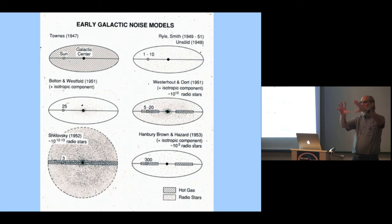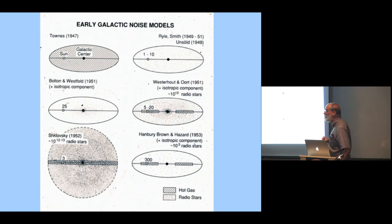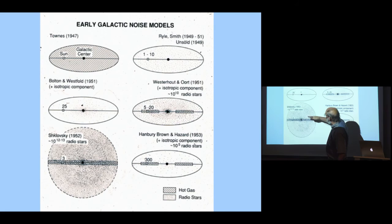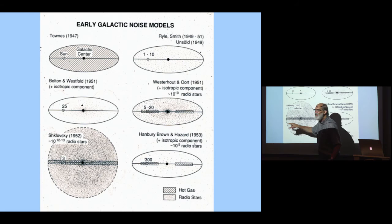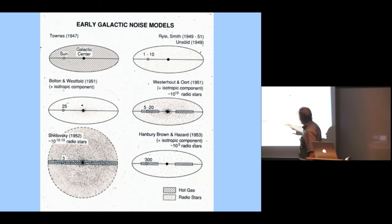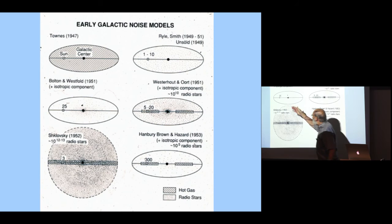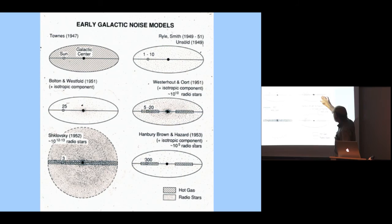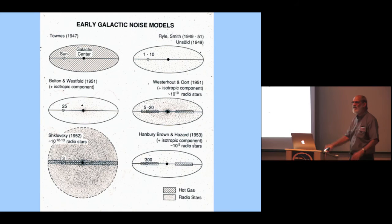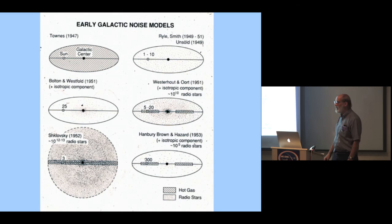There was also the question of what all this original Jansky radiation is coming from. To give you an idea of the tremendous variety of ideas in the early 50s, here are six models. Shklovsky had 10 to the 12th radio stars in a huge halo; others put in gas in the galactic plane. The density between radio stars varied from 3 parsecs to 25 parsecs in different models. Nobody could really figure it out until the synchrotron radiation idea came along in the early 50s.